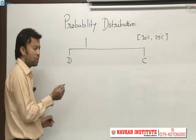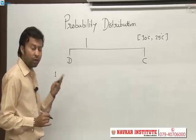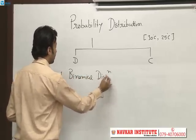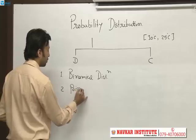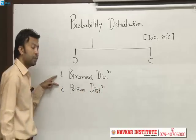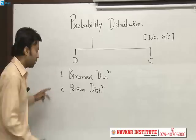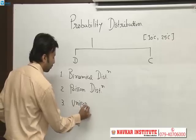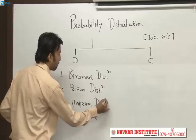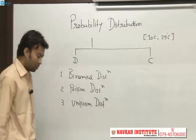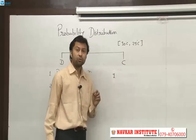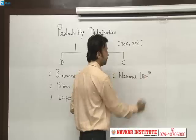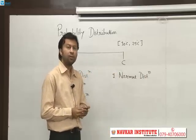For discrete variables, we have many distributions, but at CPT level we study only two: first is binomial distribution and second is Poisson distribution. There is another distribution whose name you should know — uniform distribution. For continuous distribution, the most important is normal distribution, which we apply whenever the variable follows normality.